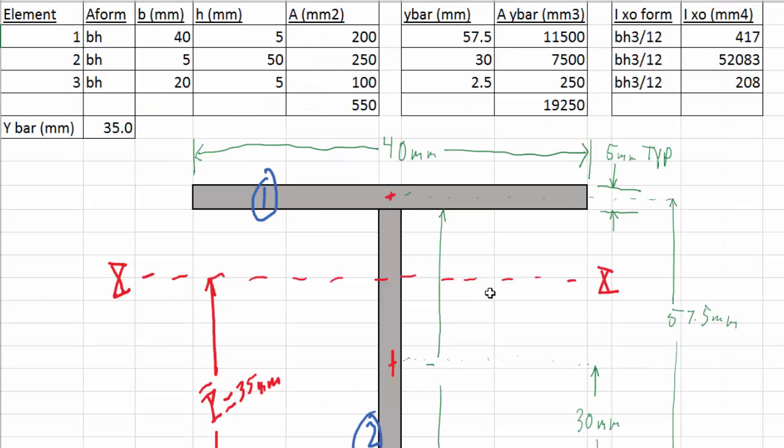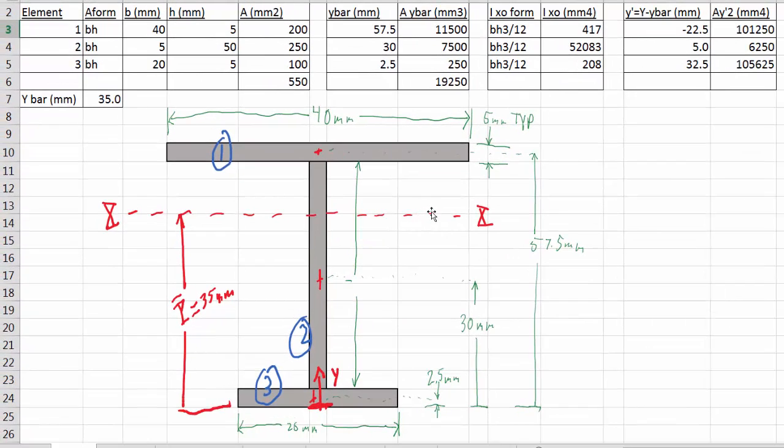So let's look here. Here's our neutral axis, right there. And the fiber that is the furthest away, fiber is just a term, is probably up here or down here. Now the total distance here is this 5mm here, this 50mm here, another 5mm. So from top to bottom, we've got a total of 60mm.